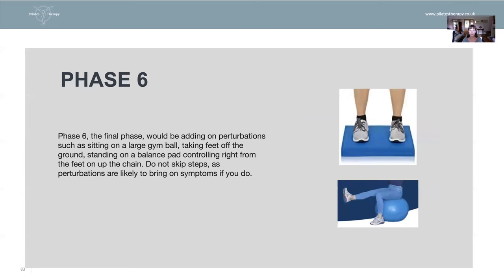Phase six is the final phase. You keep the weight on the head and start to add perturbations, such as being on a gym ball or a balance pad. This is the final phase because perturbation is where this group of people will be most symptomatic, so you wait until the very end before placing anyone on anything that challenges stability or involves the floor moving. The final stage will be feet on the ground balancing while moving the head and keeping control, then on a gym ball — rocking, lifting one leg, lifting both legs off the ball while maintaining cervical stability.